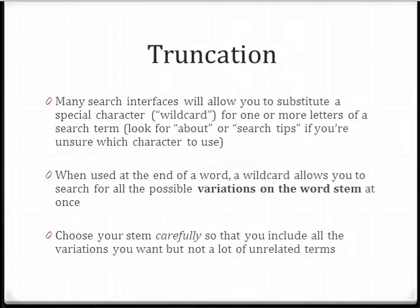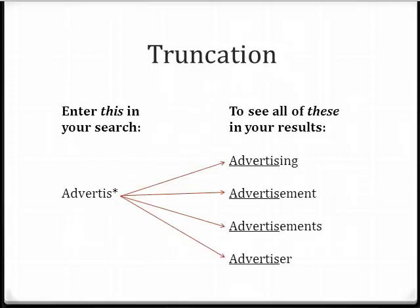Many search engines, including most databases as well as Google, will allow you to substitute a special character, or wildcard, for one or more letters of a search term. When used at the end of a term, the wildcard allows you to search for all possible variations on the word at once. To use this tool, first think of all of the different forms a keyword might take. Compare these words to see what parts they all have in common and where they begin to differ. Keep as much of the word stem as possible to avoid accidentally retrieving unrelated results.